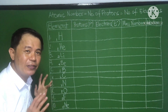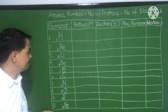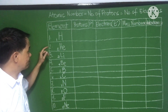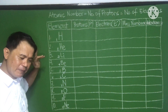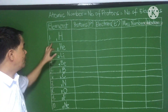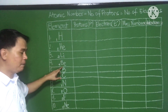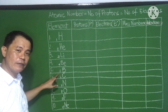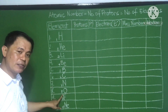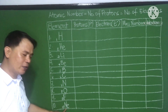I have written on the board the first ten elements and their respective atomic numbers. Every element is arranged according to increasing atomic number: Hydrogen - 1, Helium - 2, Lithium - 3, Beryllium - 4, Boron - 5, Carbon - 6, Nitrogen - 7, Oxygen - 8, Fluorine - 9, Neon - 10.